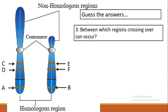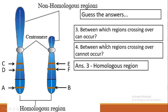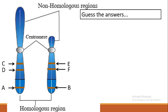Third question: between which regions can crossing over occur? We remember crossing over occurs between non-sister chromatids of homologous chromosomes, so the chromosomes should have a homologous region. The answer is: crossing over occurs between the homologous region. Next: between which regions can crossing over not occur? The answer is: crossing over cannot occur between the non-homologous region.